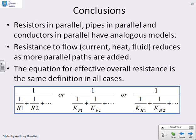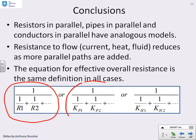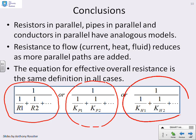Some conclusions: resistors in parallel, pipes in parallel, and conductors in parallel have analogous models. The resistance to flow — whether current, heat, or fluid — reduces as more parallel paths are added, because adding more parallel paths gives more flow. The equation for effective overall resistance is the same in all cases: 1 over (1 over R1 plus 1 over R2 plus …), or 1 over (1 over Kp1 plus 1 over Kp2 plus …), or 1 over (1 over KH1 plus 1 over KH2 plus …). Therefore these systems are considered analogous.